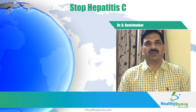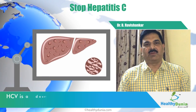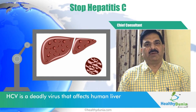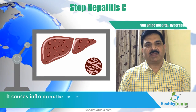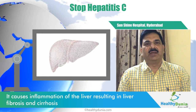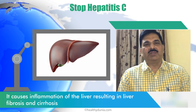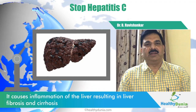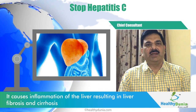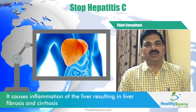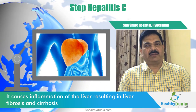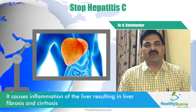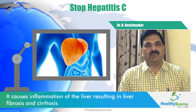Today let us discuss HCV infection. HCV is a virus that affects the liver. It will continuously produce inflammation in the liver, which subsequently goes on to fibrosis and then cirrhosis. That is why there is a need to recognize this virus early and treat it. Otherwise, if left untreated, the infection would finally culminate in cirrhosis of the liver.